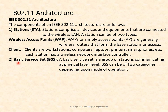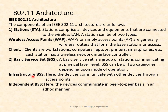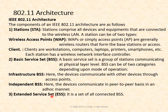The next component is BSS — basic service set. The basic service set is a group of stations communicating at the physical layer. The BSS can be of two categories: infrastructure BSS, where devices communicate with other devices through access points, and ad hoc BSS (also called independent BSS), where devices communicate on a peer-to-peer basis without an access point.